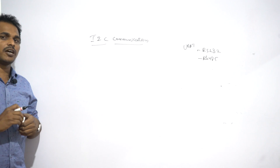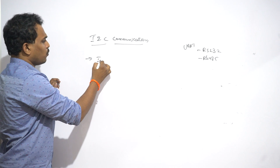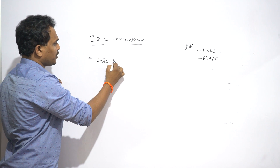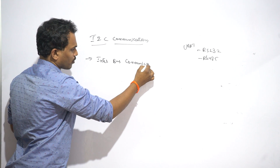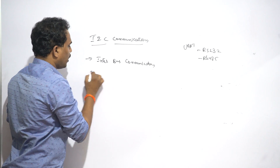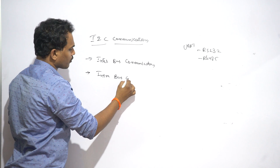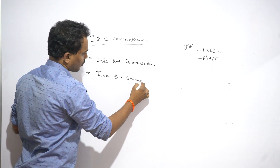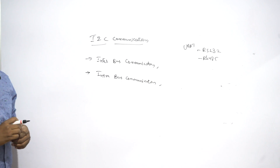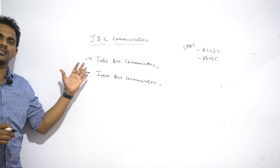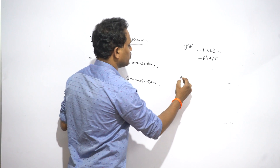The serial communication bus systems are classified into two types: one is the inter-bus communication system and the other is the intra-bus communication system.